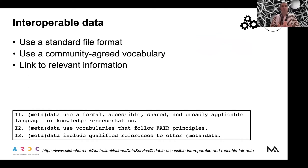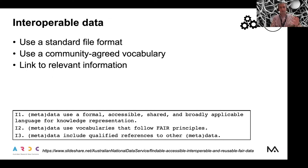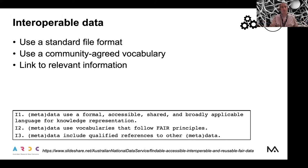Interoperable data means you try to use a standard file format, a community-agreed vocabulary, and you link relevant information to your data — for example, in metadata. That means you try to avoid exotic file formats, because it may be very difficult for someone to read data produced by exotic software. If you stick to standard file formats, you maximize the interoperability of your data and more people can read it. For example, in structural biology, the PDB format became very standardized very quickly, and now all structures of proteins are in PDB.